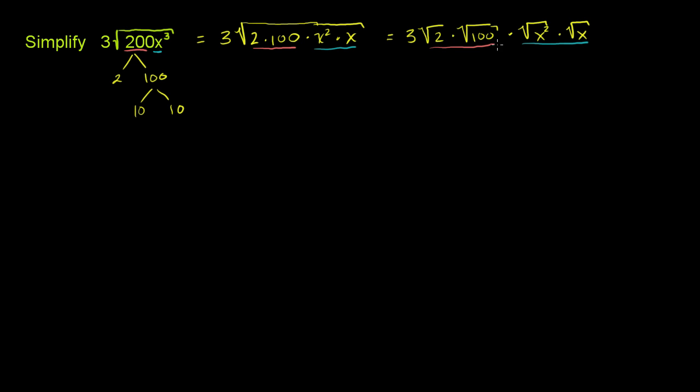Now, several of these are not too hard to evaluate. So we have our 3 out front. So this is going to be equal to 3. And then let me mark off the terms. Let's do this one first. What's the square root of 100? Or the principal root of 100? The positive square root? Well, it's 10. 10 times 10 is 100. So it's going to be 3 times 10. That's that term right there.